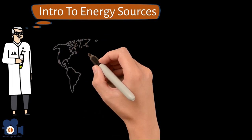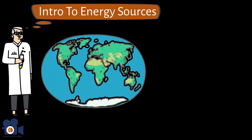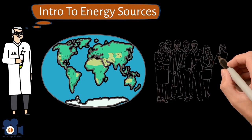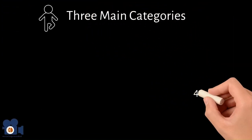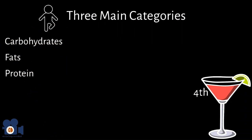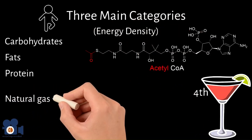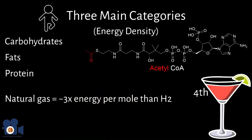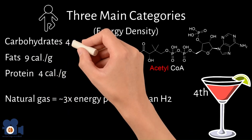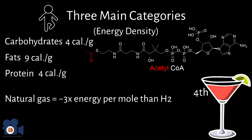Energy might be the single most important issue for the human race to solve in the upcoming decades. We're first going to discuss how we as humans get energy in the form of food. There are three main categories humans get their energy from — carbohydrates, fats, and protein. Regardless of category, they're all converted into acetyl-CoA by your body, which is the molecule used to produce the energy that heats your body and allows you to move. The difference is their energy density: a gram of fat provides 9 calories, while carbohydrates and proteins each provide 4 calories per gram, and alcohol provides 7 calories per gram.